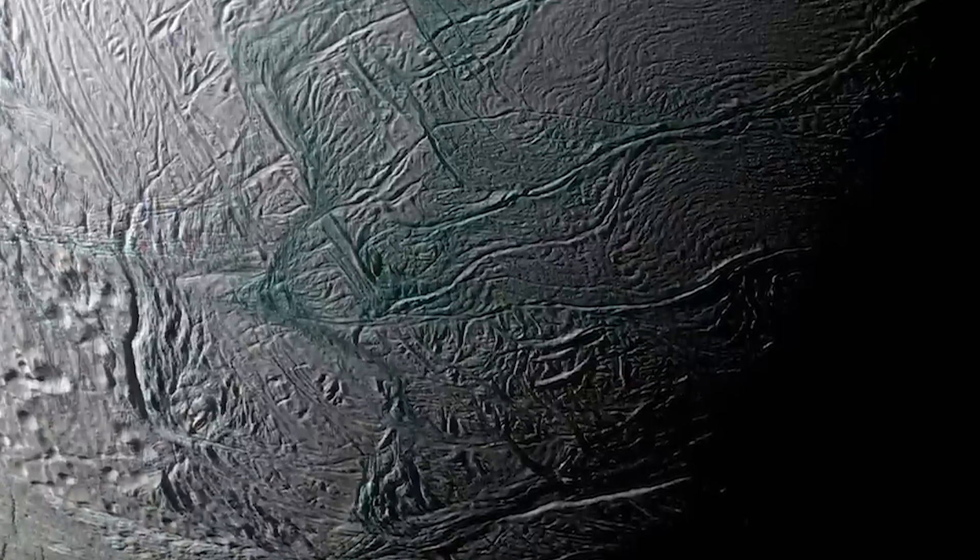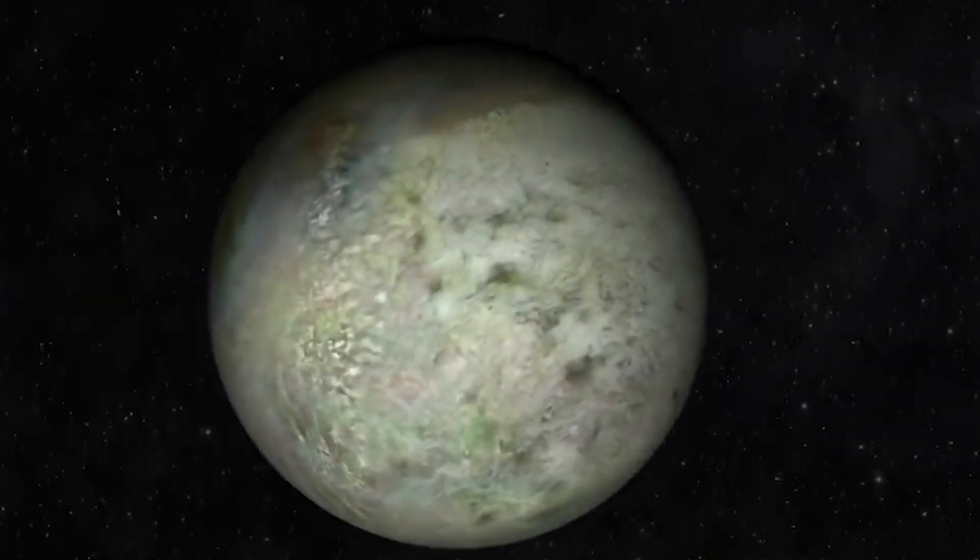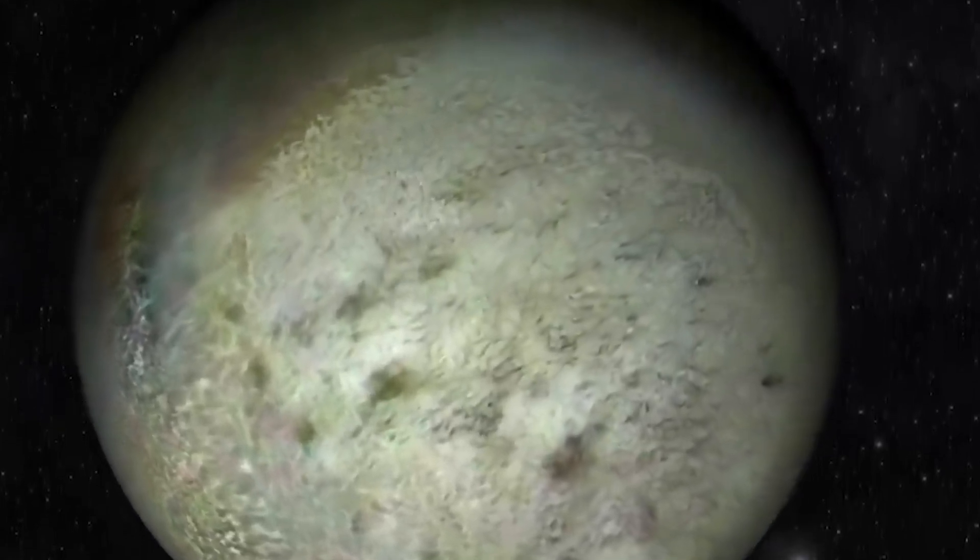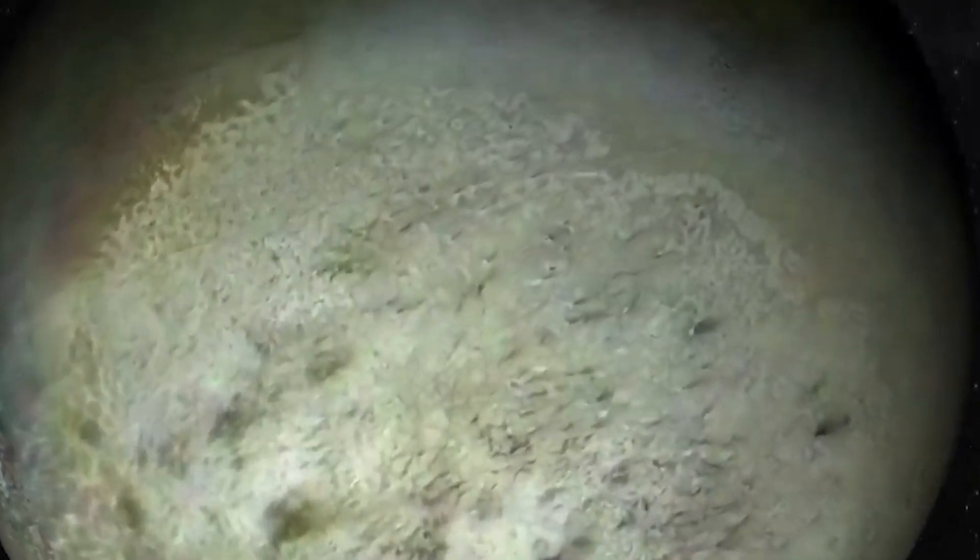Sunlight might heat the nitrogen trapped under the icy crust, causing it to build pressure until it bursts out in spectacular plumes. This process creates smooth patches on Triton's surface, further supporting the idea of active geological processes.